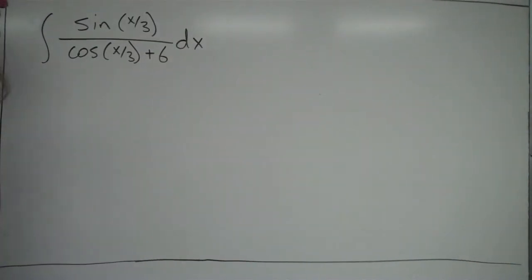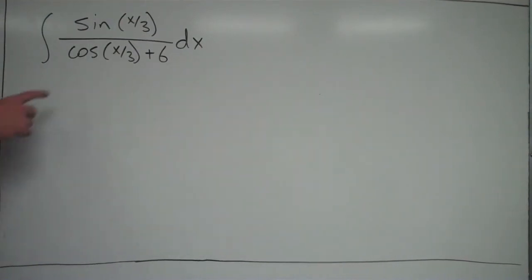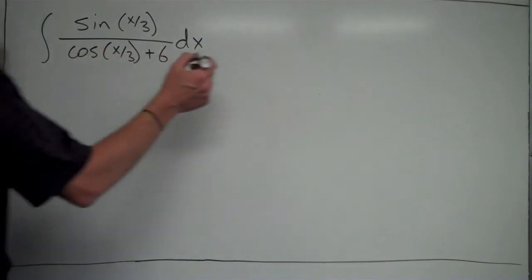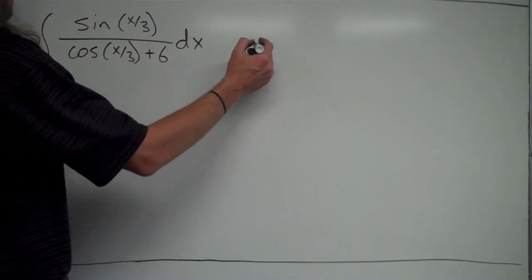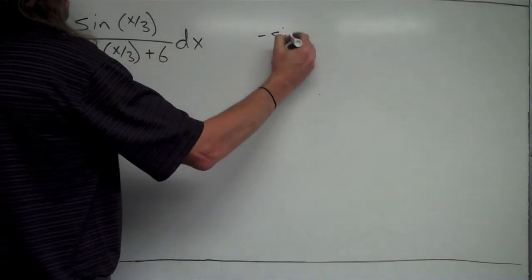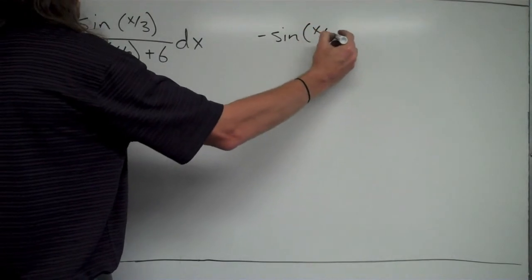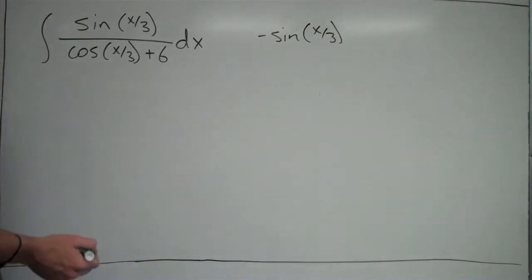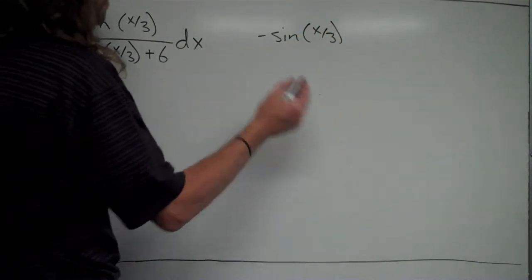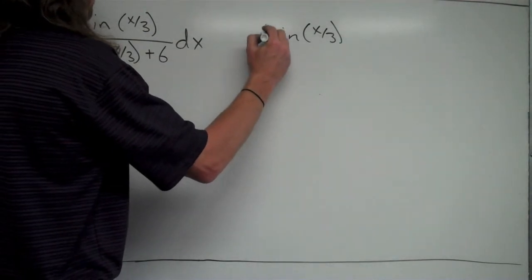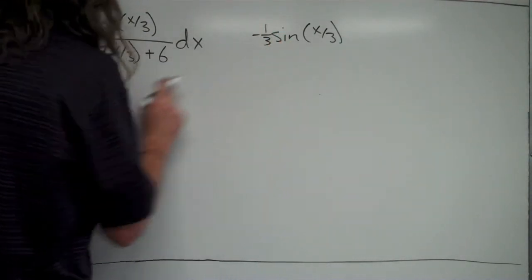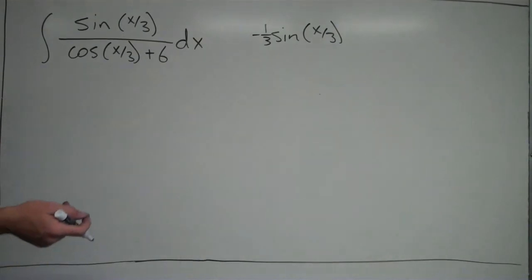Another example here. The natural log rule works when you take the derivative of the bottom and it equals the top. If I take the derivative of the bottom — the derivative of cosine(x/3) — the derivative of cosine is negative sine, so it would be negative sine. I keep the inner function the same and multiply by the derivative of the inner function, which is 1/3, so it would be negative 1/3 in front. That's the derivative of the bottom, since the derivative of 6 is just 0.